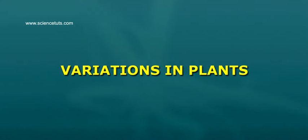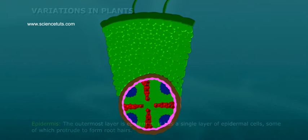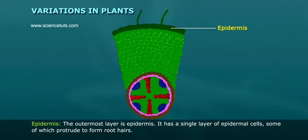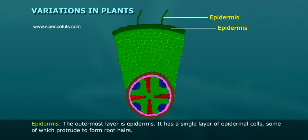The anatomy of a dicotyledonous root. The outermost layer is epidermis. It has a single layer of epidermis cells, some of which protrude to form root hairs.